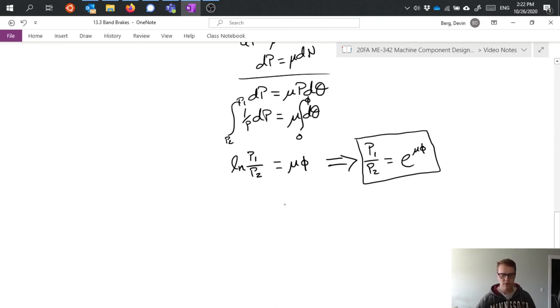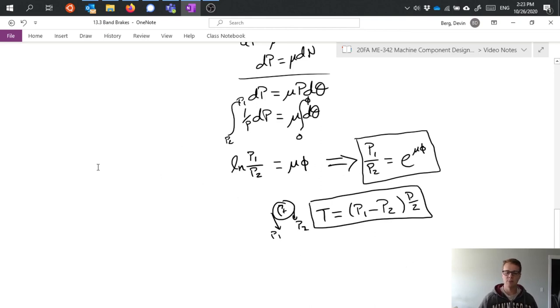Now I also can look at my free body diagram of my drum where I have P2, P1 and some torque that's being applied by that friction, which means that I can solve for T as P1 minus P2 times radius. So now, between these two equations, I, in theory, also have enough information to actually solve this problem and figure out what my torque is for a given known tension or a given known torque, solve for tension, and so forth.